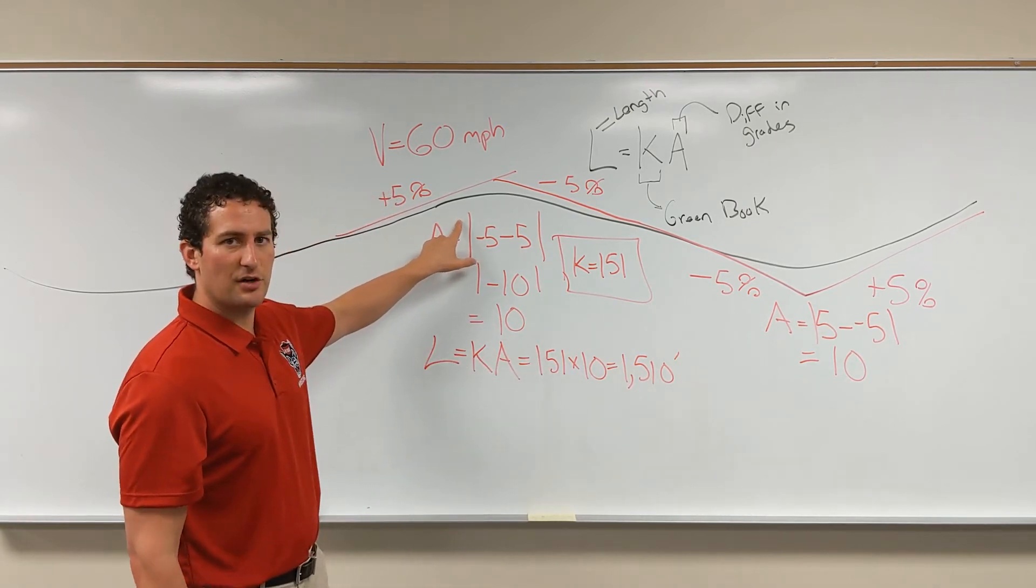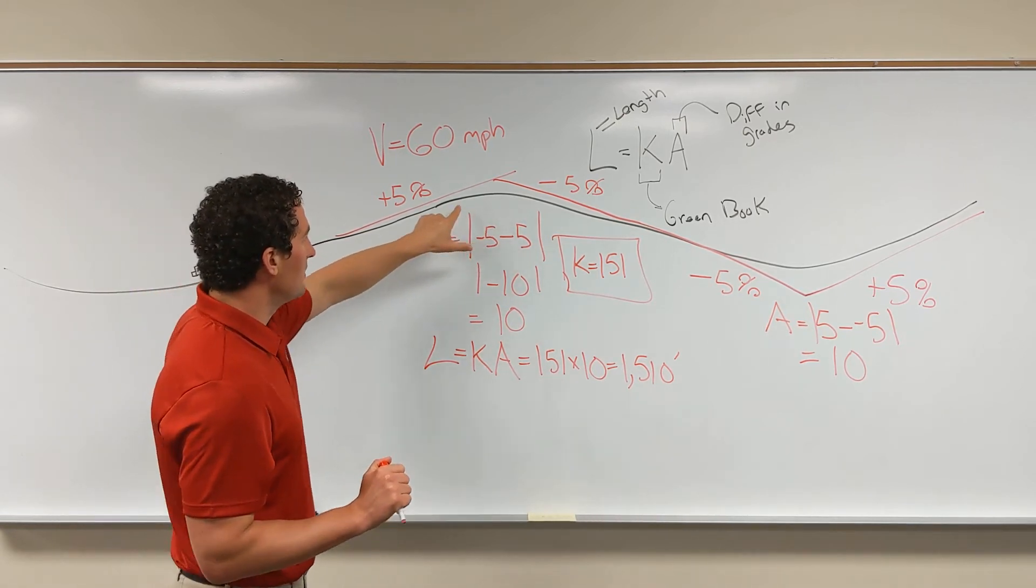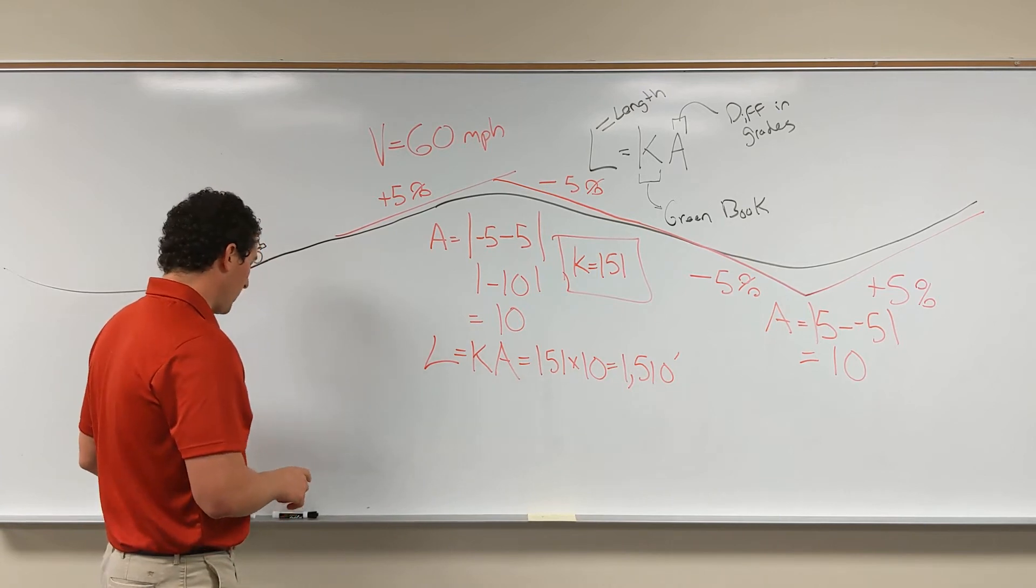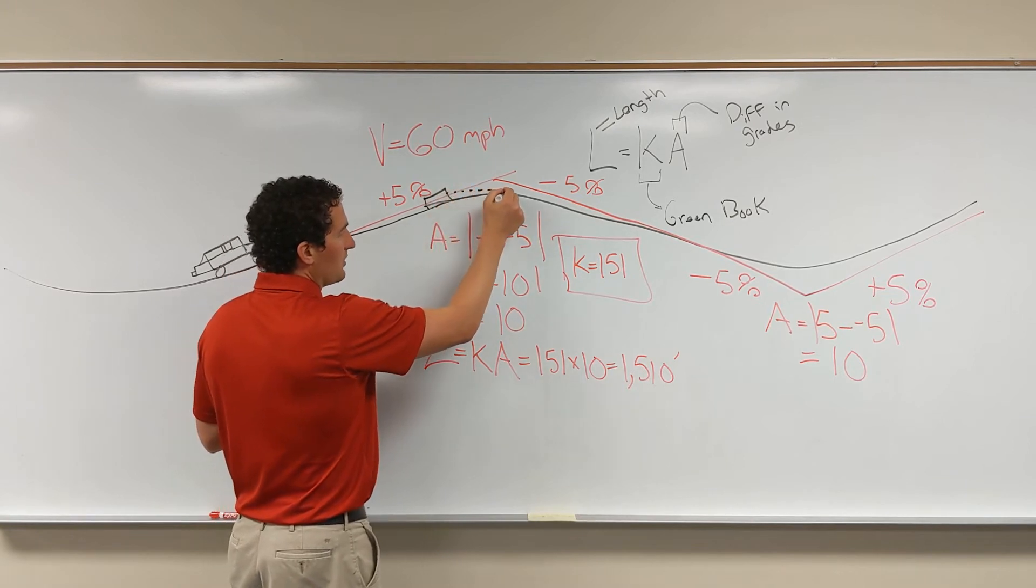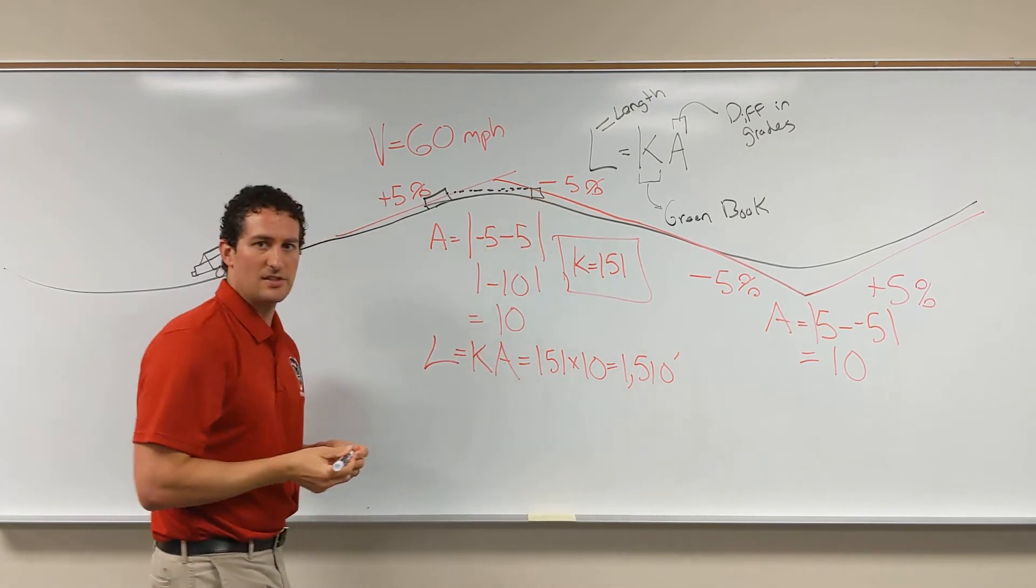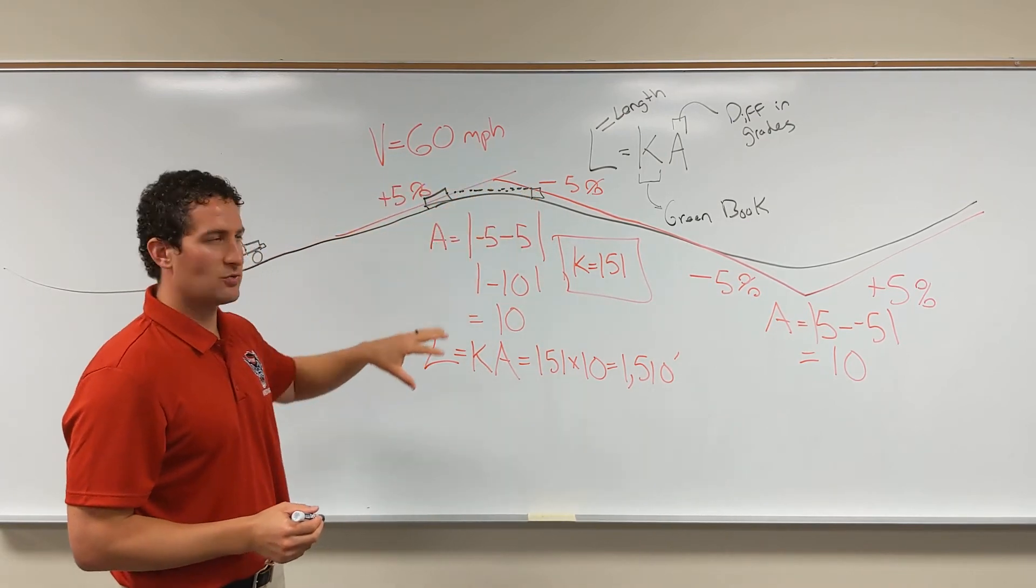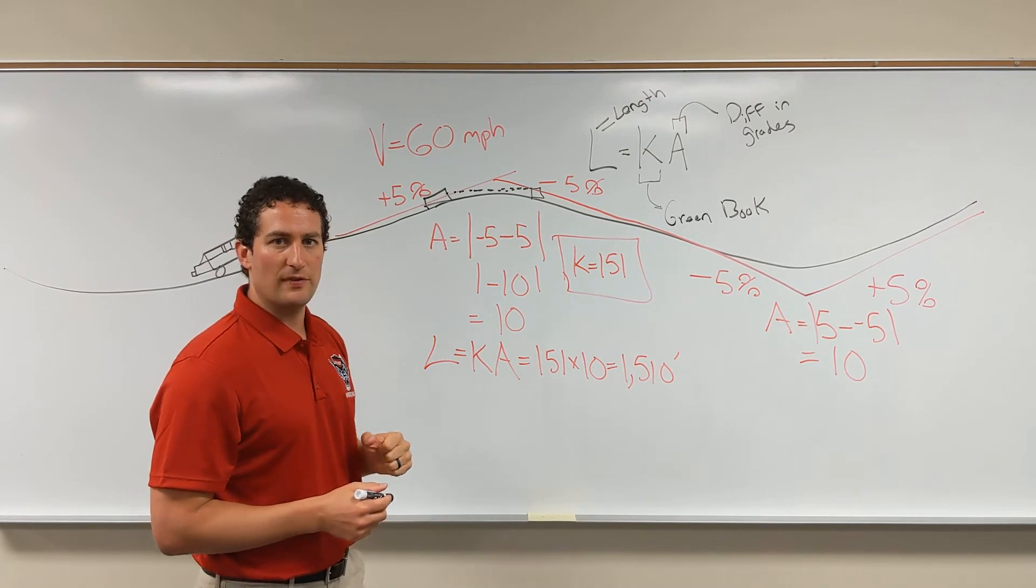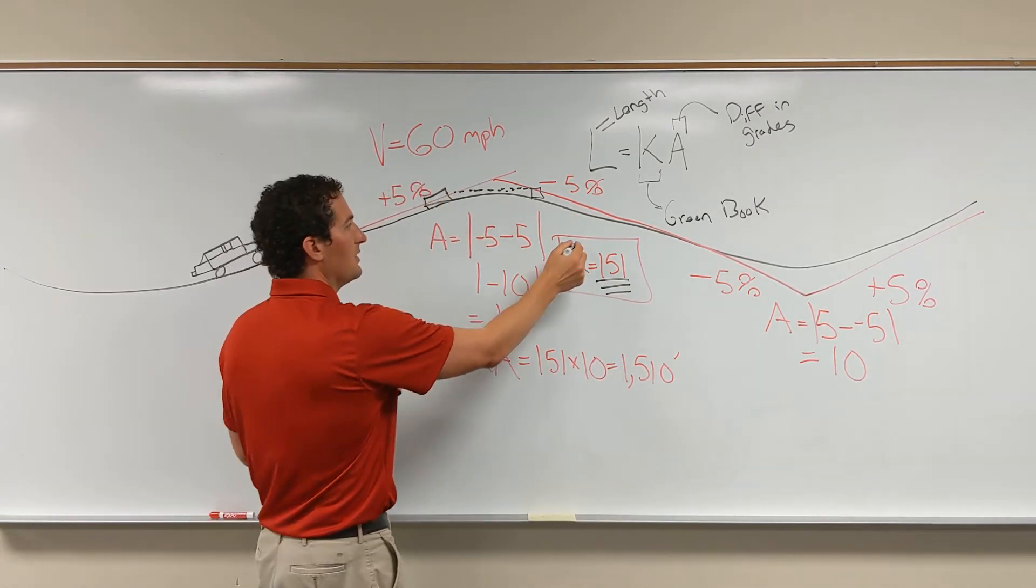What we're worried about for a crest curve is as you are approaching the crest curve, you have enough sight distance to see an obstruction on the other side. The scenario we're worried about would be here's our vehicle, and we want to make sure that this vehicle can see far enough along to see some hazard that's in the roadway. So we're looking at the driver's height of their eyes, seeing some obstacle. This is what we're dealing with when we're looking at a crest curve.